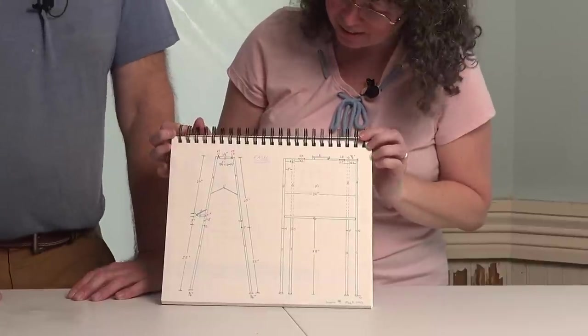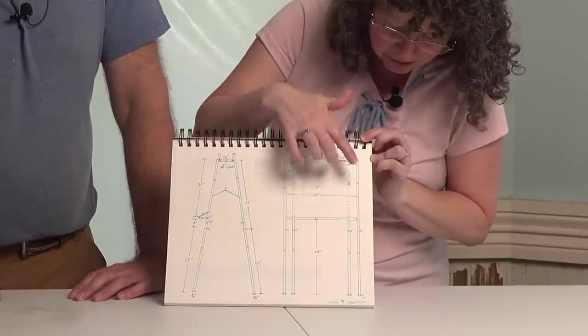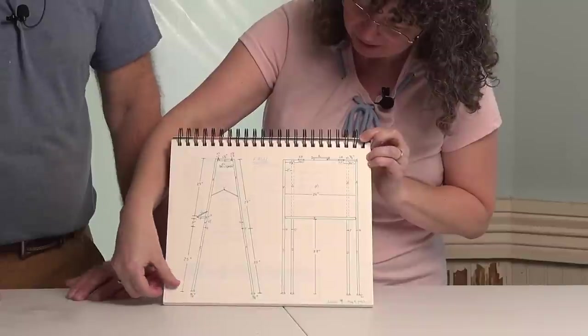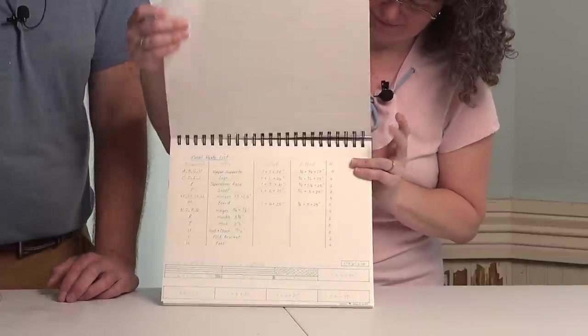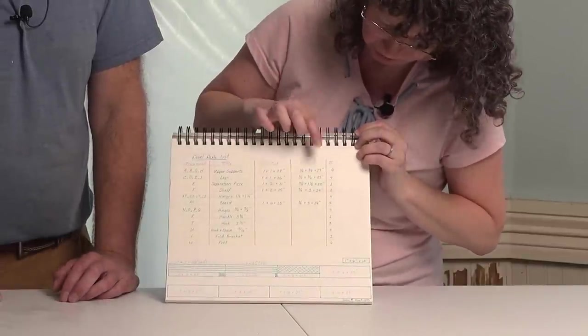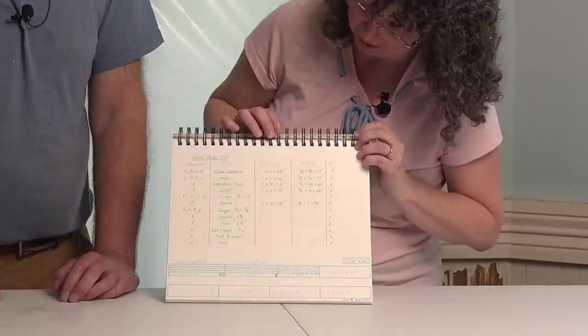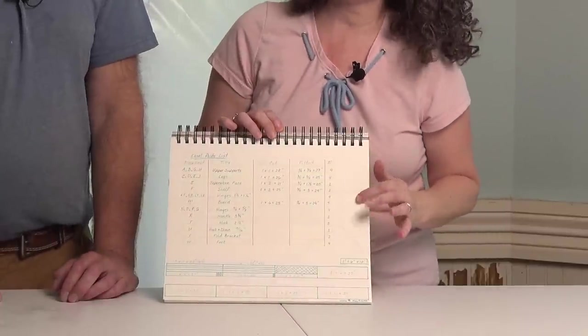Here is the easel, this is the side view, and this is the front view. And then here are the cut list, the fitted list, and what each board looks like. So we will do this times two. We're making two of these things.